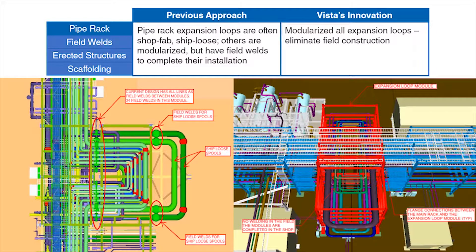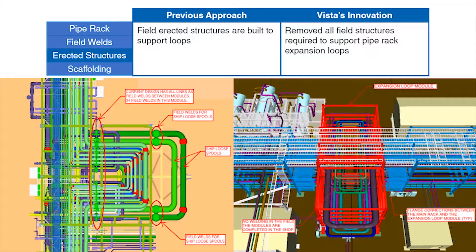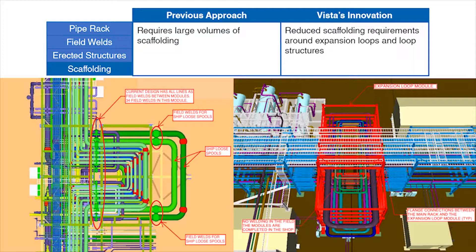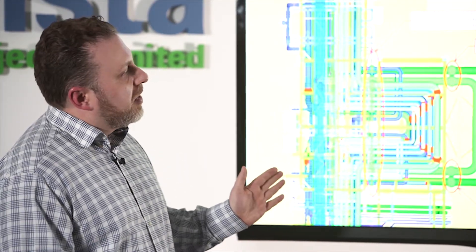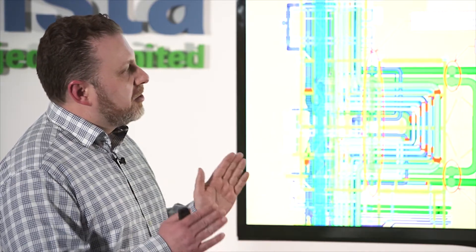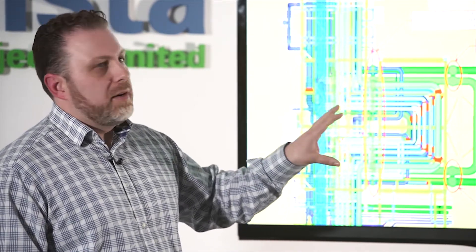This is an example of our expansion loop modules. Past designs have had a main rack module where we had a number of field welds located between the modules. We also had field-erected structures supporting field pieces of the expansion loop, and as you can imagine from the earlier picture, the amount of scaffolding required to get at these field welds. Our design, through planning, allows us to compress the design, strategically locate our loops, and eliminate all the field welding required in these modules.